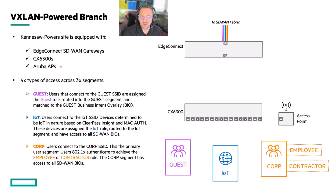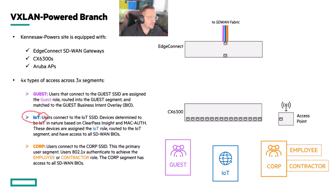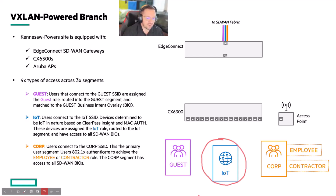Imagine I have an EdgeNet 6300 and a couple of access points, and I've got four types of access. I've got guest users that I have a VRF configured for. I've got IoT devices — things that are not guest, but not trusted enough to be in the corporate segment. They're kind of in their own little domain.